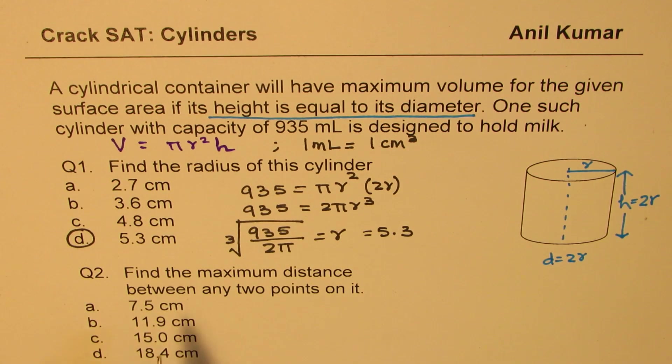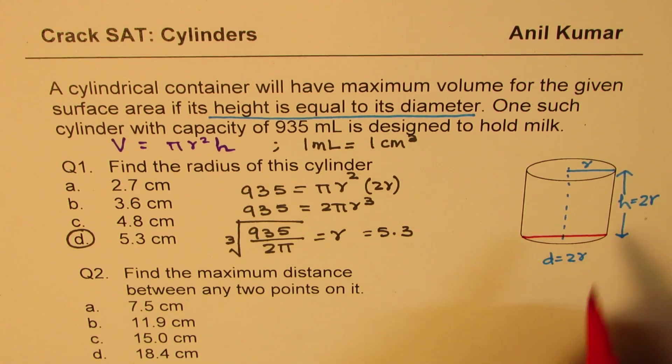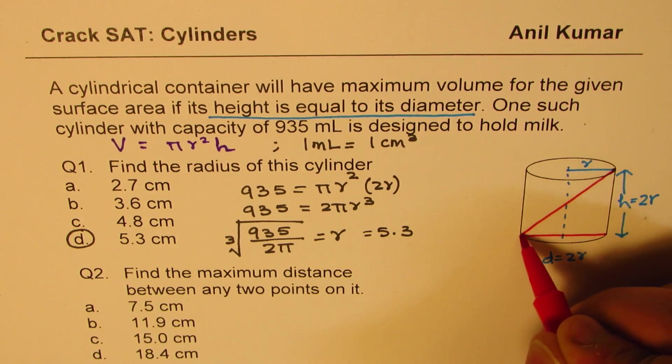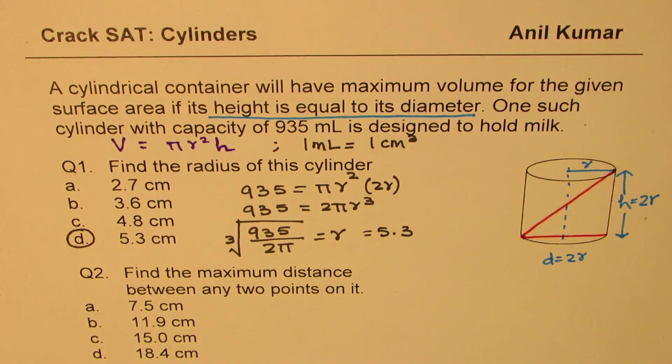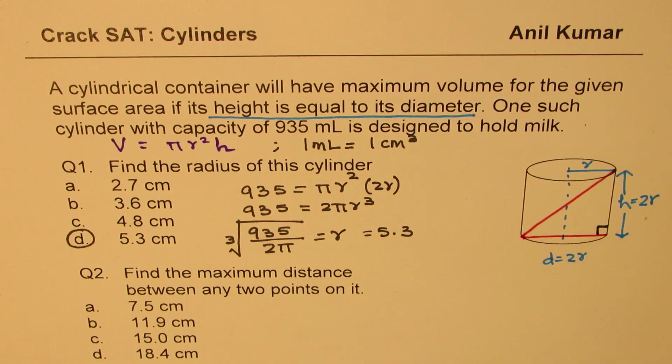Now the second question is: find the maximum distance between any two points on it. So what could be the maximum distance? Well, the maximum distance could be if you consider two points diagonally across. So if I consider these two points, I should get the maximum distance. So we could use the Pythagorean theorem to find the maximum distance. We now know what height and diameter is.